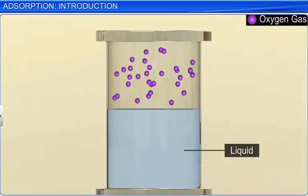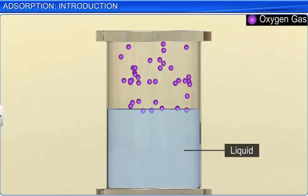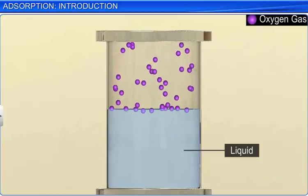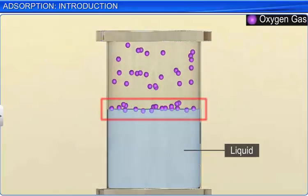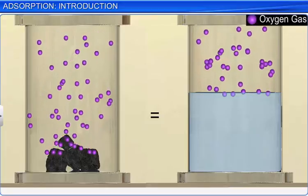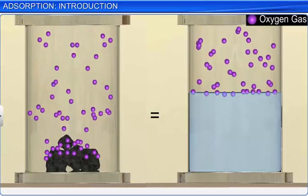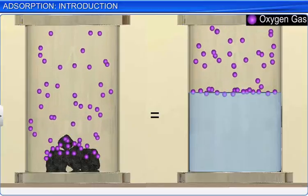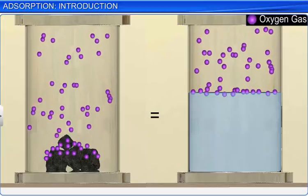The same reaction occurs if a liquid is put into a closed vessel containing gas. The gas molecules will accumulate on the surface of the liquid. This phenomenon of attracting and retaining the molecules of a substance on the surface of a solid or liquid, resulting in a higher concentration of the molecules on the surface, is known as adsorption.